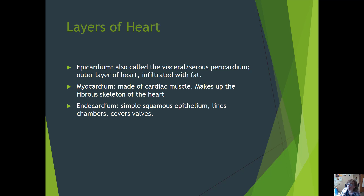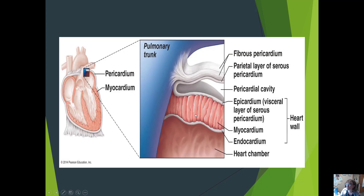The thickest layer of the heart is the myocardium, made up of cardiac muscle — the cardiomyocytes — which form the fibrous skeleton of the heart. The endocardium is simple squamous epithelium that lines the chambers and covers the valves. This diagram shows the fibrous and serous portions of the parietal pericardium, the epicardium (visceral serous pericardium), the myocardium, and the endocardium.